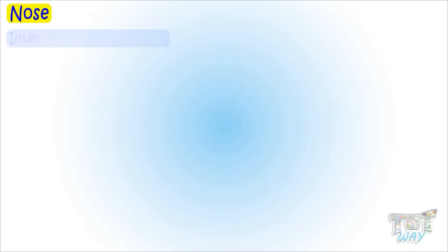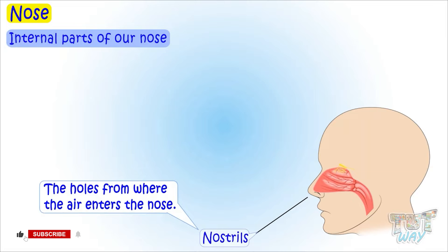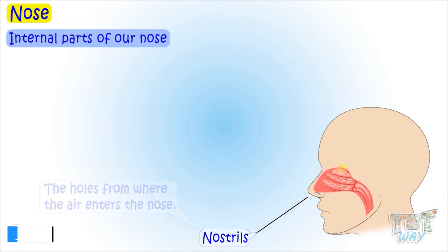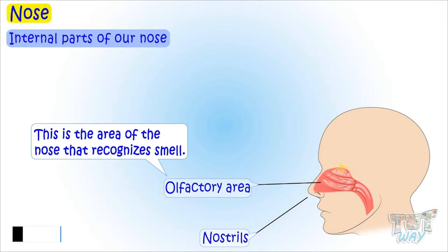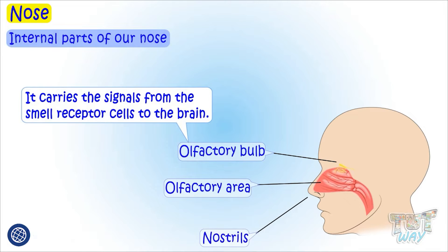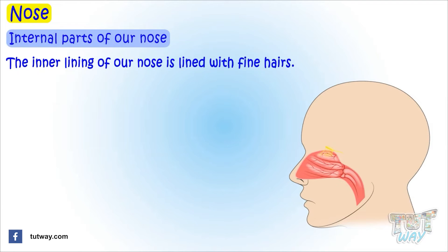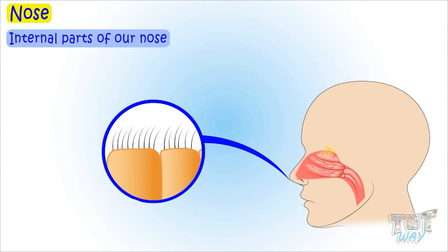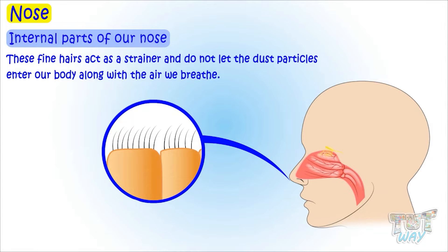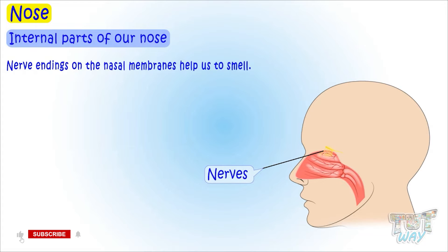Now let's learn the internal parts of our nose. The nostrils are the holes from where the air enters the nose. The olfactory area is the area of the nose that recognizes smell. The olfactory bulb carries the signal from the smell receptor cells to the brain. The inner lining of our nose, or the nostrils, is lined with fine hairs. These fine hairs act as a strainer and do not let dust particles enter our body along with the air we breathe.